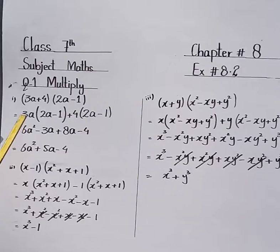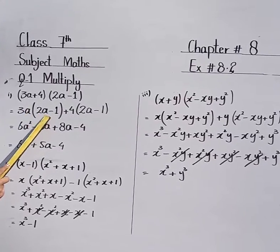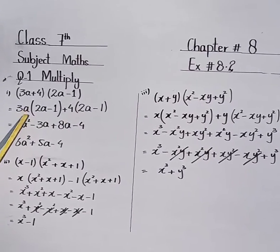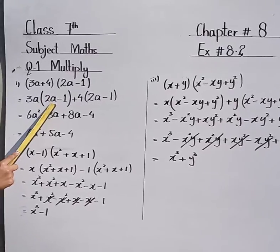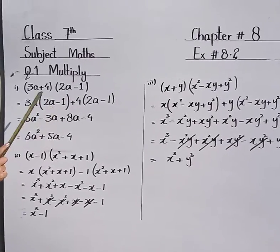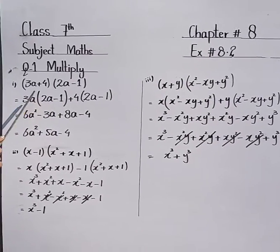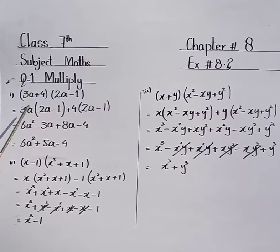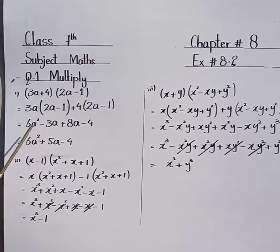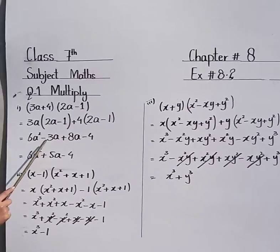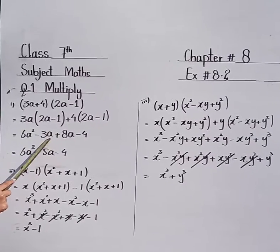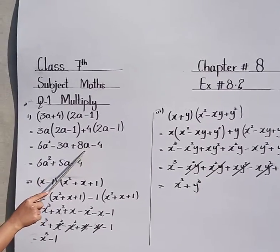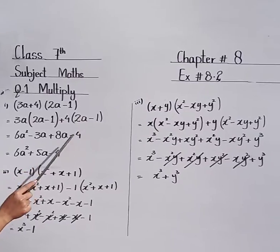Three twos are 6, a multiplied by a. Students, this you know very well — when bases are same, their exponents are added. Exponent of a is 1 and its exponent is also 1, so 1 plus 1 equals 2. So we get 6a squared minus 3a. Plus four twos are 8a, plus minus minus gives 4.